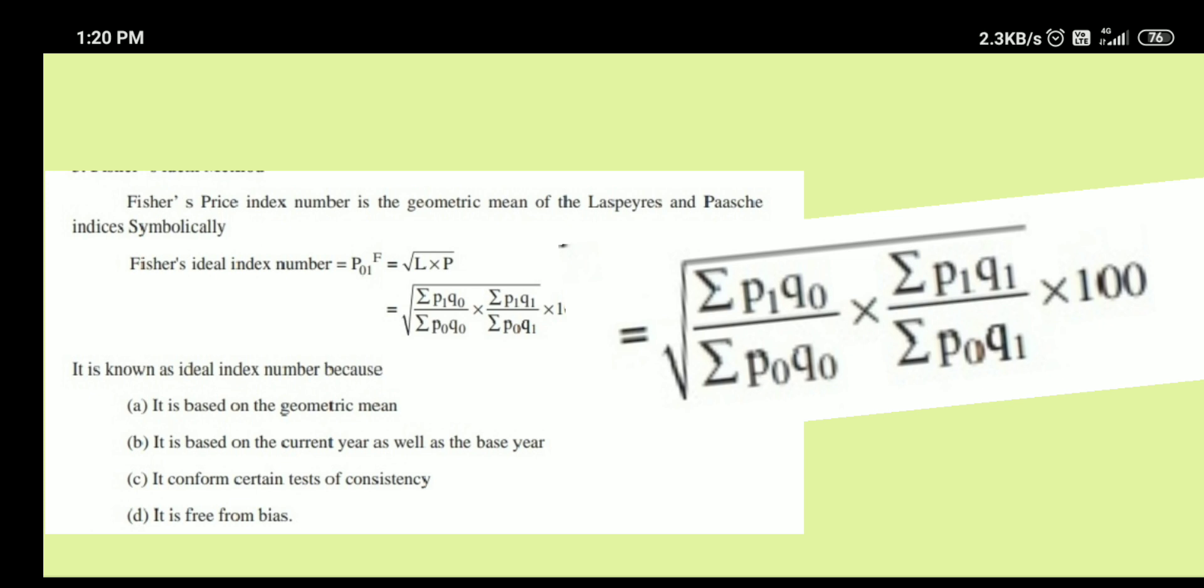Before that, let us revise the formula once. Fisher's ideal index number formula is square root of summation P1Q0 by summation P0Q0 into summation P1Q1 by summation P0Q1 into 100.